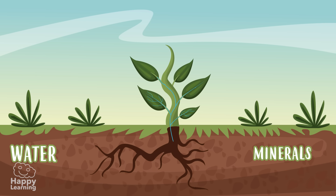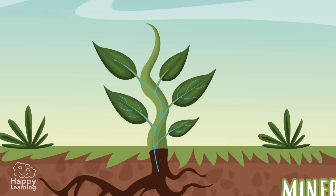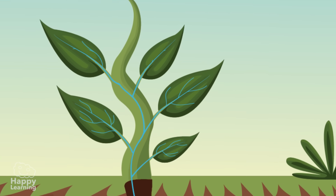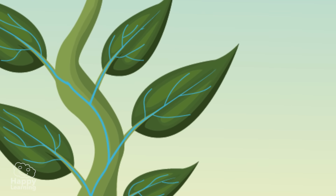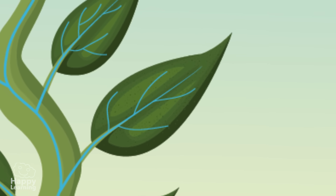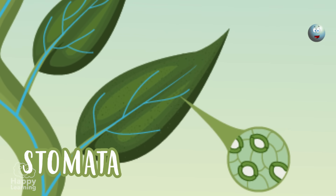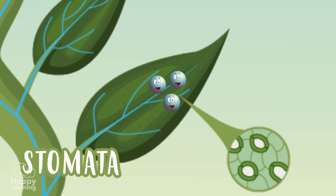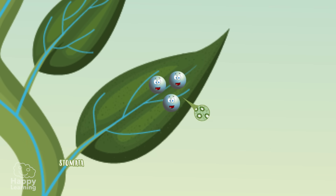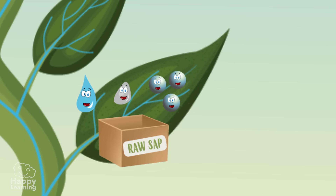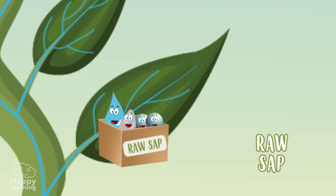Water with minerals are transported up the stem, reaching the leaves. The leaves are full of tiny pores called stomata, which absorb carbon dioxide that the surrounding air contains. All this — containing water, minerals and carbon dioxide — is called raw sap.